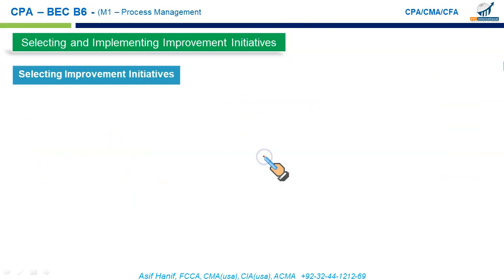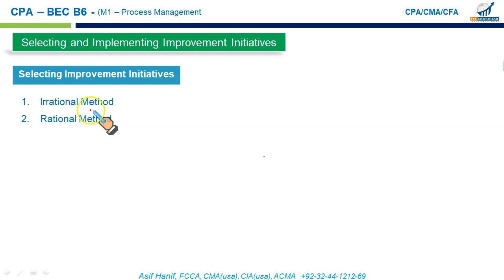The next sub-module is selecting and implementing improvement initiatives. Broadly, improvement initiatives can be irrational or rational. Irrational simply means using gut feeling, intuition, emotional approaches, or following current trends or fashions — this may work short-term but is not a long-term solution for process improvement. The rational method is more structured, more systematic, and follows a sensible approach.